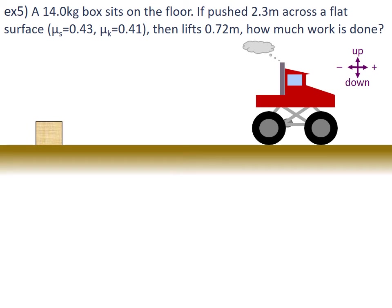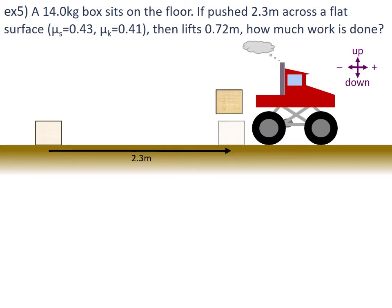Example 5: We have a 14.0 kilogram box that is sitting on the floor. It's going to be pushed 2.3 metres across a flat surface, and then it's lifted 0.72 metres into the back of an automobile. We want to know how much work has been done. The mass is 14.0 kilograms, with a displacement of 2.3 metres — but this is actually a two-part process.